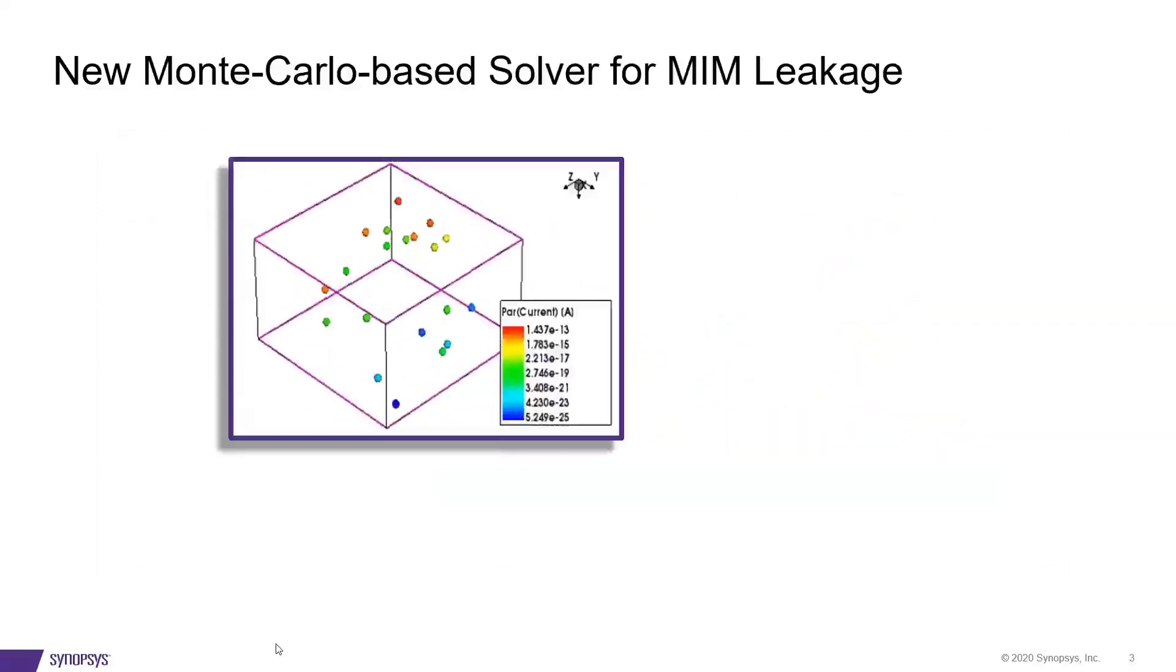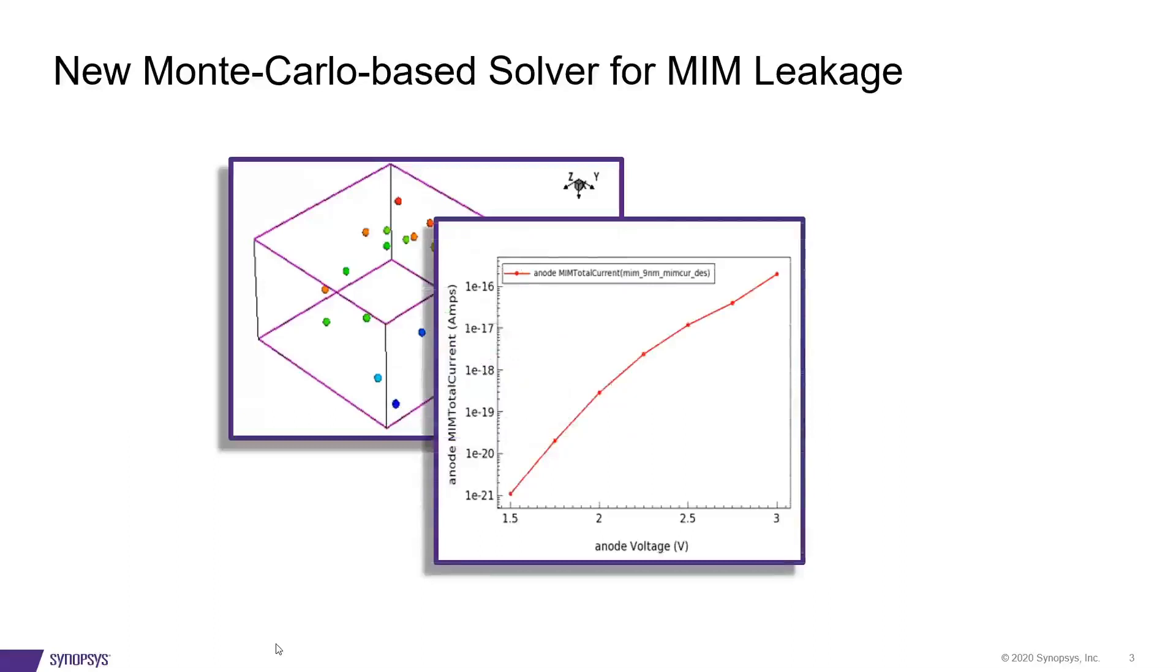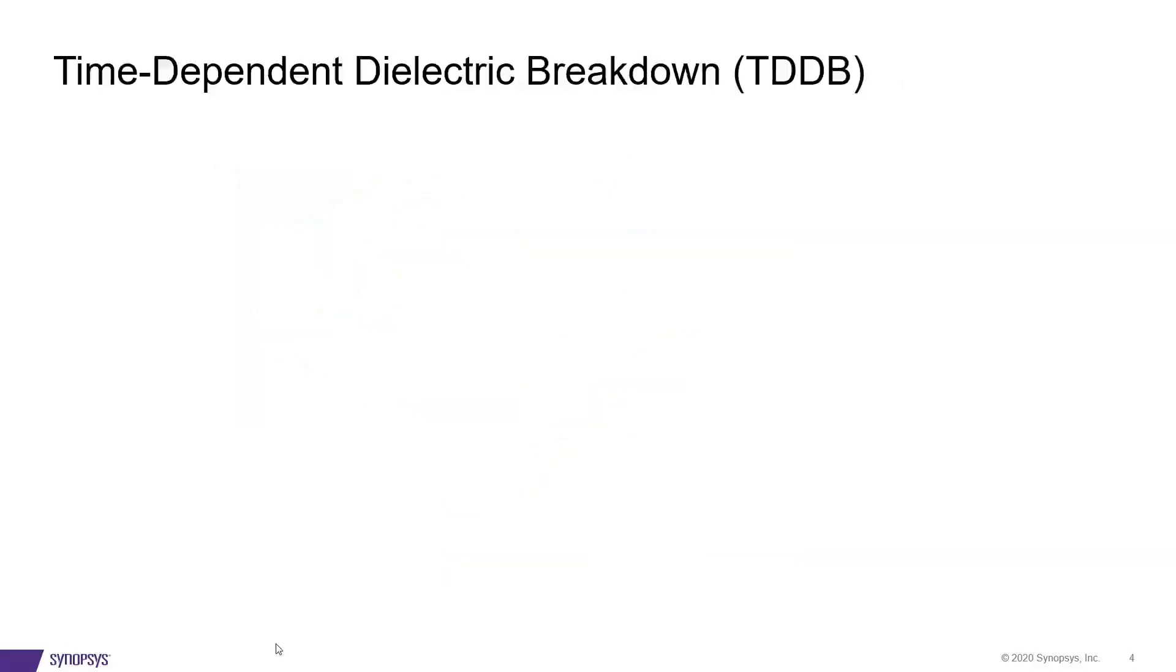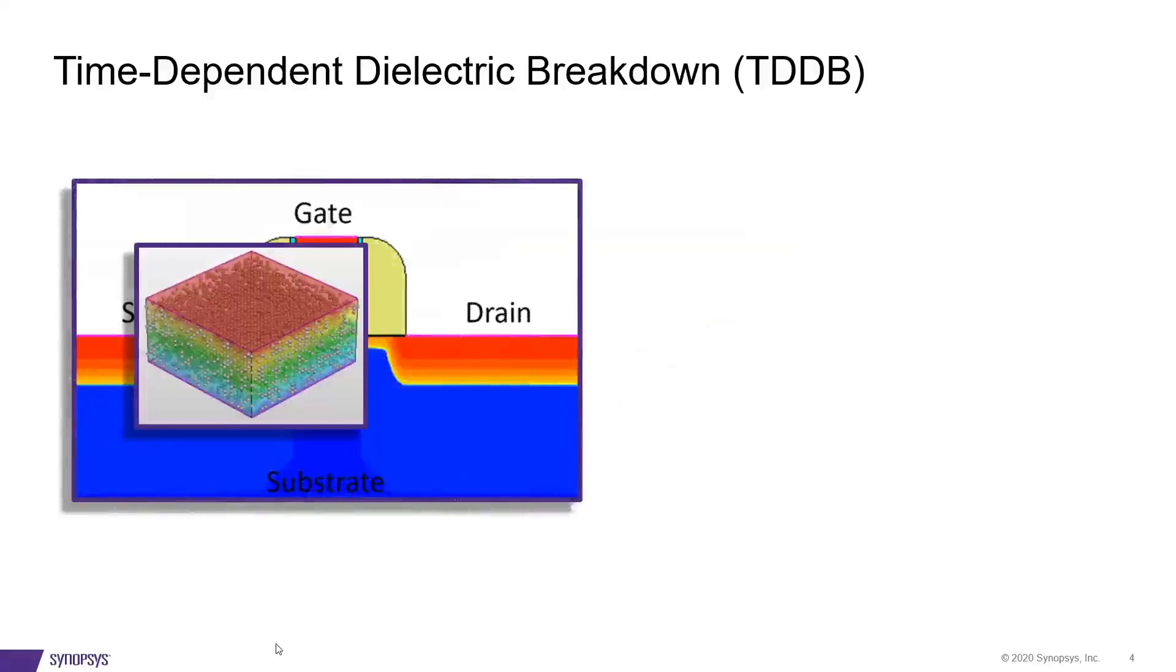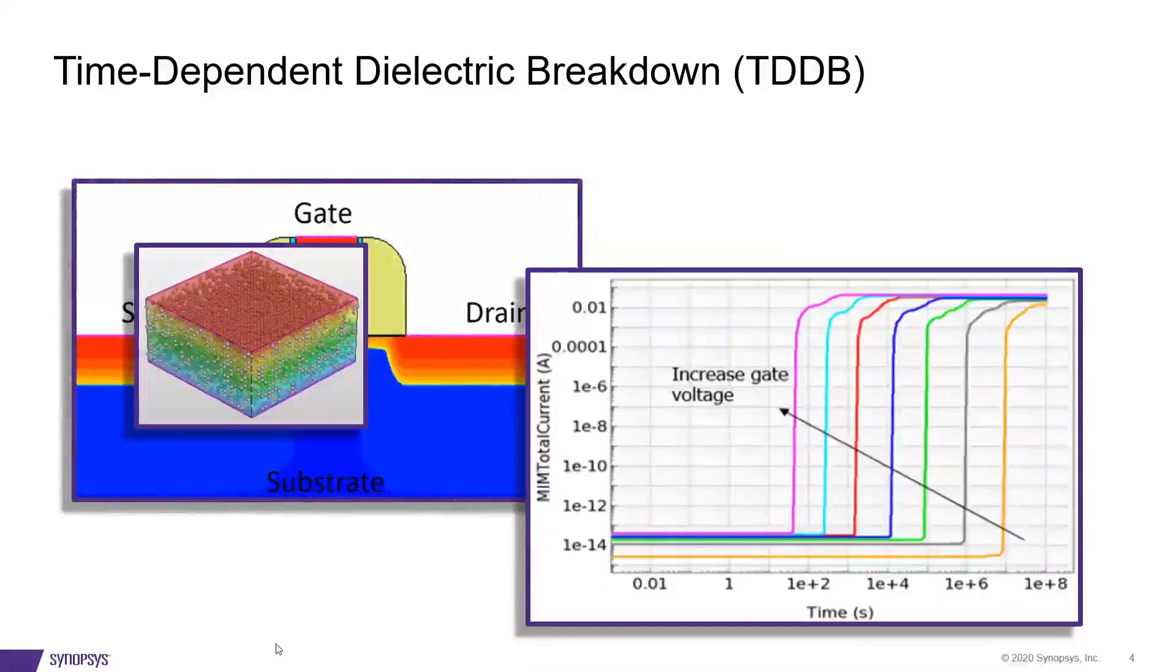New Monte Carlo-based solver for DRAM metal insulator metal leakage simulation based on user-given trap distribution. The same solver can be used for time-dependent dielectric breakdown simulations. It supports dynamic trap generation with field and temperature dependency.